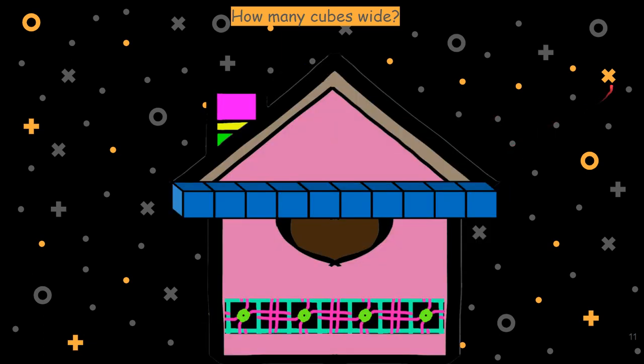How many cubes wide is the house? Now remember, we started at the widest part of the house. So we went all the way down here. Can you count those? The house is ten cubes wide.